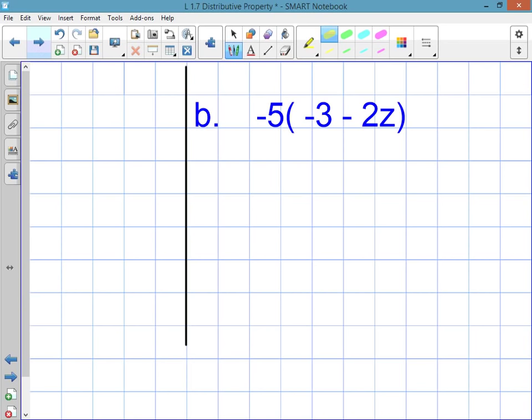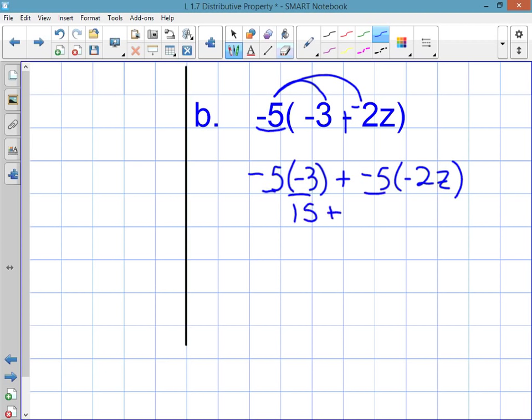Okay, second part of example 3, part b. Same situation. Outside of the parentheses you have a negative, only this time it's a negative number. On the inside you have a minus, so I'm going to change that to add the opposite. And then you're going to distribute the negative 5 to the negative 3 and the negative 5 to the negative 2z. Write it out: negative 5 times negative 3 plus negative 5 times negative 2z. When you multiply negative 5 times negative 3, a negative times a negative is a positive, so that's 15. Plus negative 5 times negative 2z, a negative times a negative is a positive, so that's positive 10z. And that's it. That's your answer.